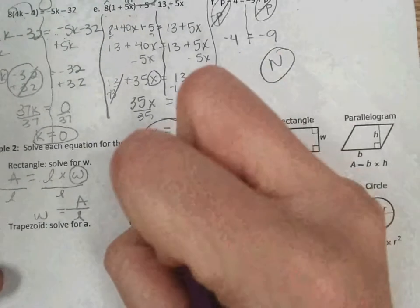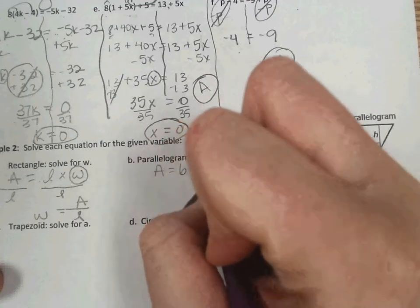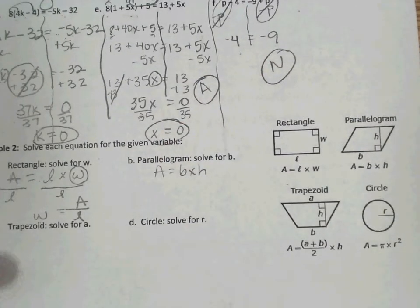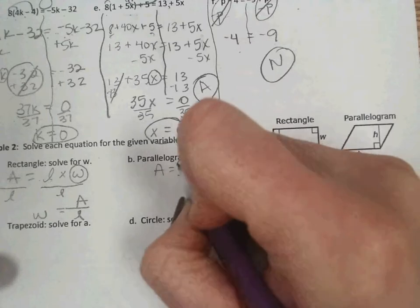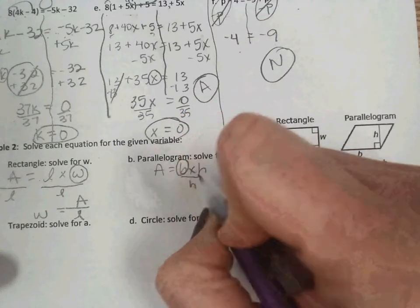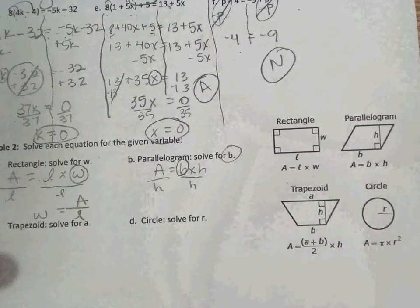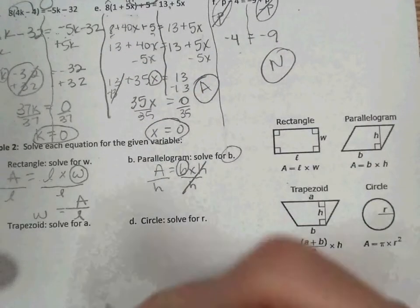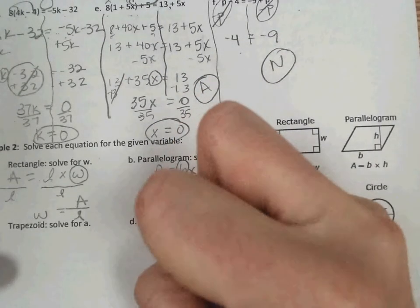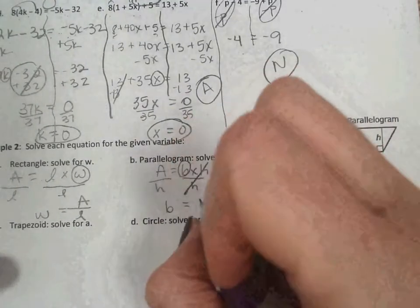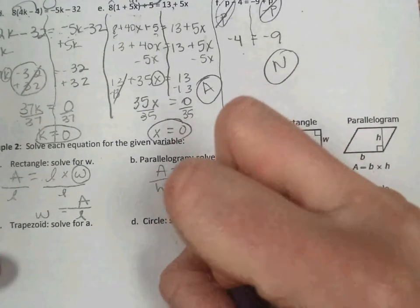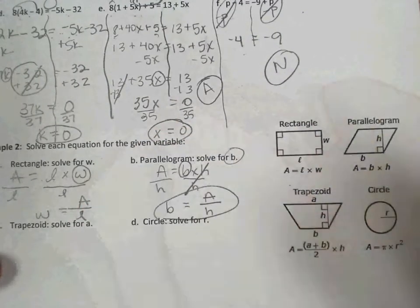For a parallelogram, the area is base times height. We're being asked to solve for b. So similarly, we would divide both sides by h. The h's cancel out. So to find the value for the base, we would just divide the area by the height.